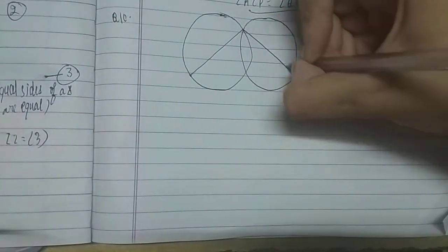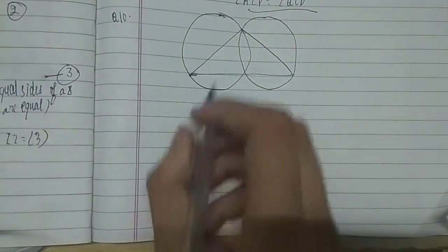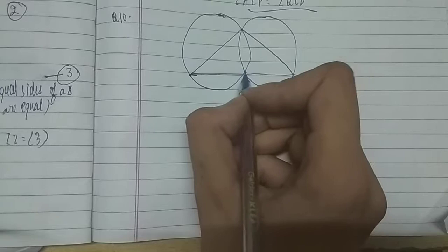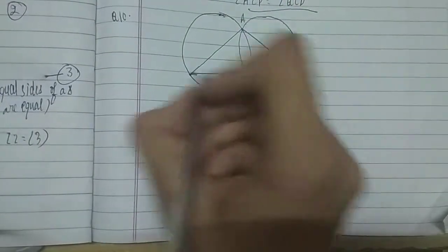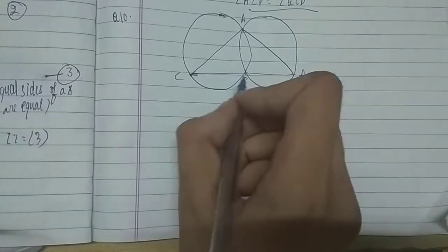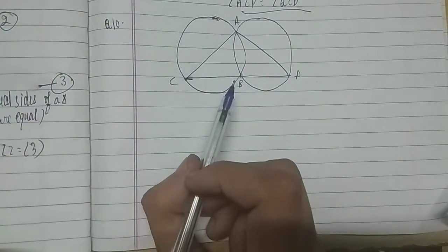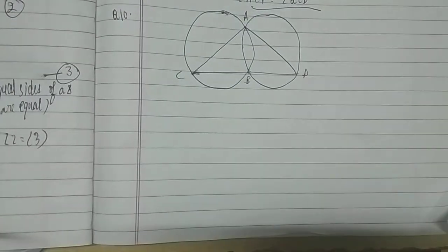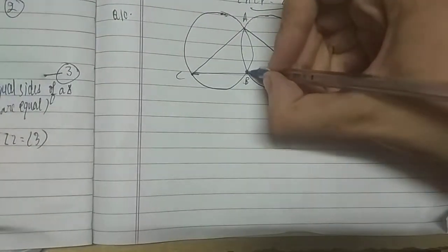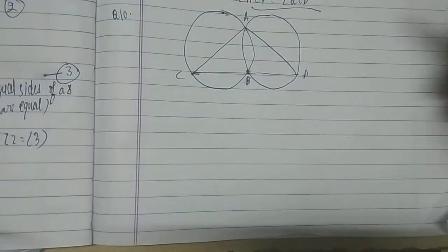Let's say this is side one and this is side two, and let's join them. So let's name the points A, B, C, and D. We have to prove that the point of intersection of these two circles — which is point B — lies on the third side.